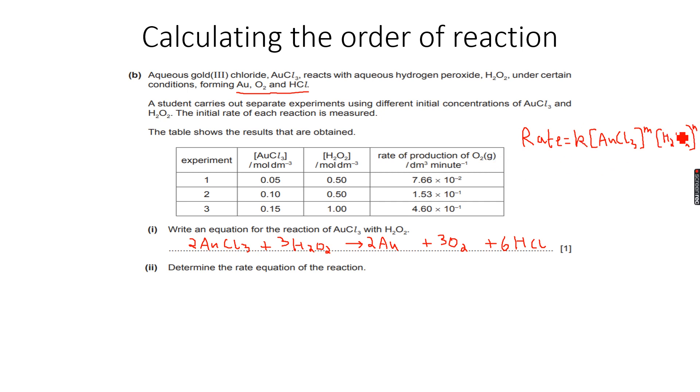This is the general rate equation. We have to calculate M and N so that we can determine the exact rate equation.